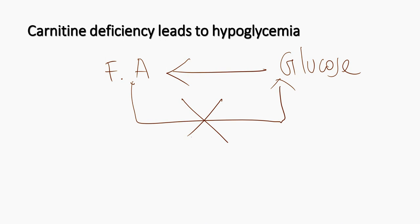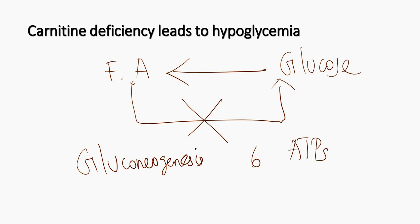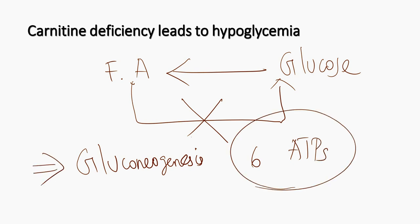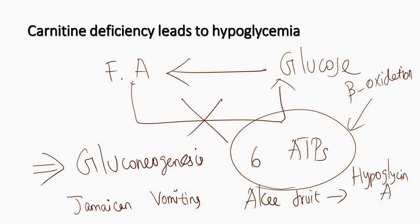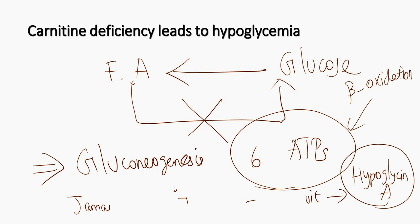How does carnitine deficiency lead to hypoglycemia? Gluconeogenesis requires 6 ATP if produced from pyruvate, and these ATPs are usually derived from beta-oxidation. That is why any defect in beta-oxidation leads to hypoglycemia. For example, Jamaican vomiting sickness is due to eating of unripened ackee fruit, which contains an unusual amino acid known as hypoglycin. This hypoglycin inhibits fatty acyl-CoA dehydrogenase, so impaired beta-oxidation of fatty acids leads to hypoglycemia.